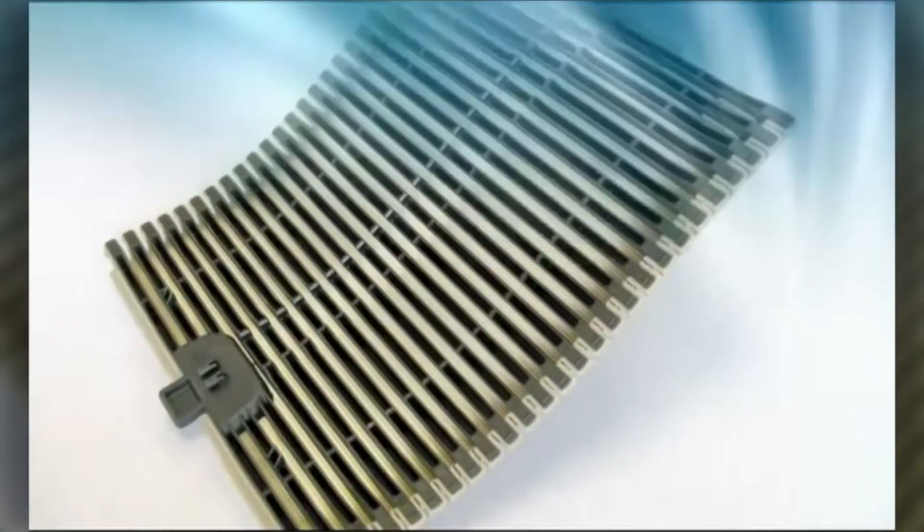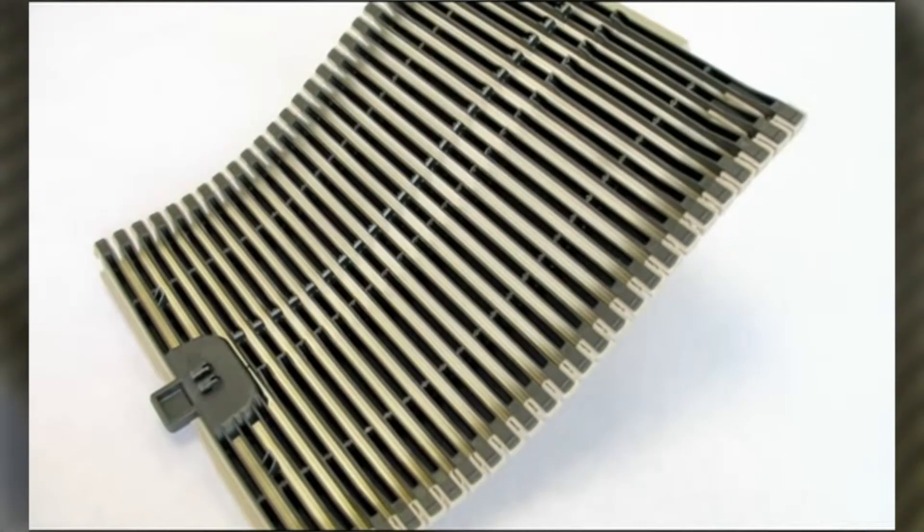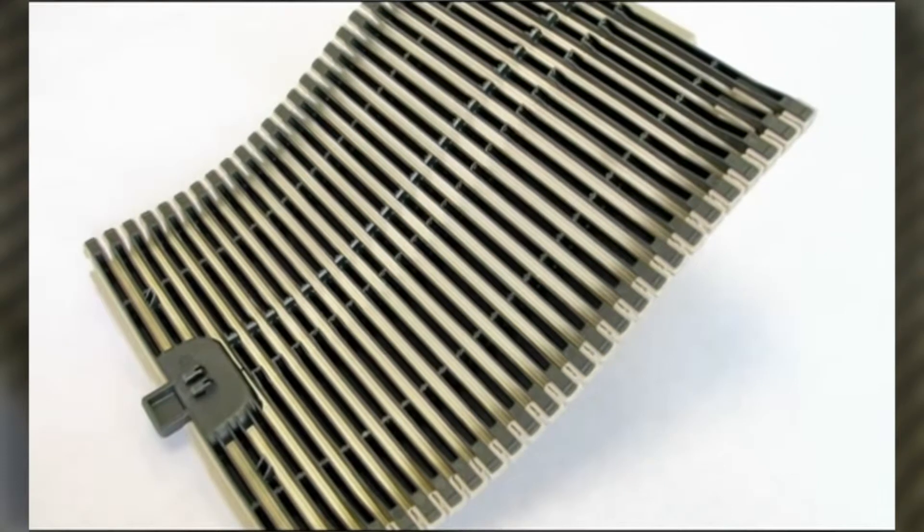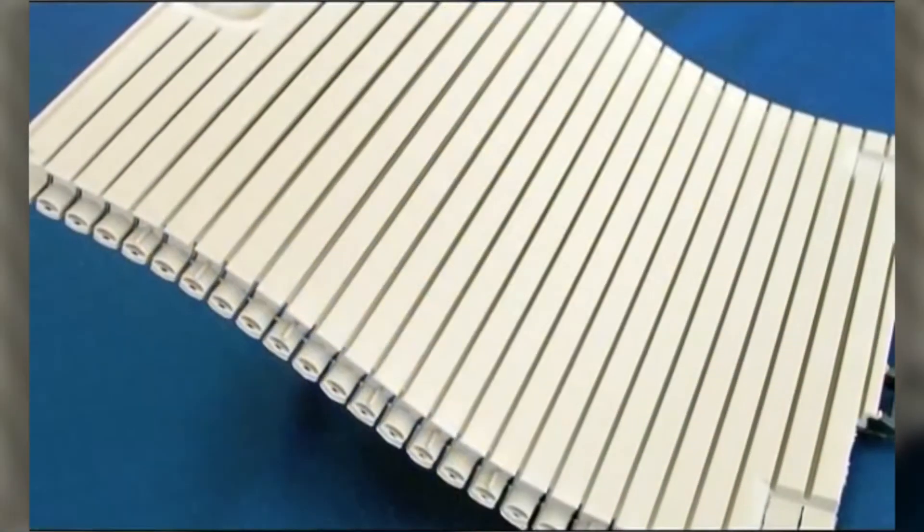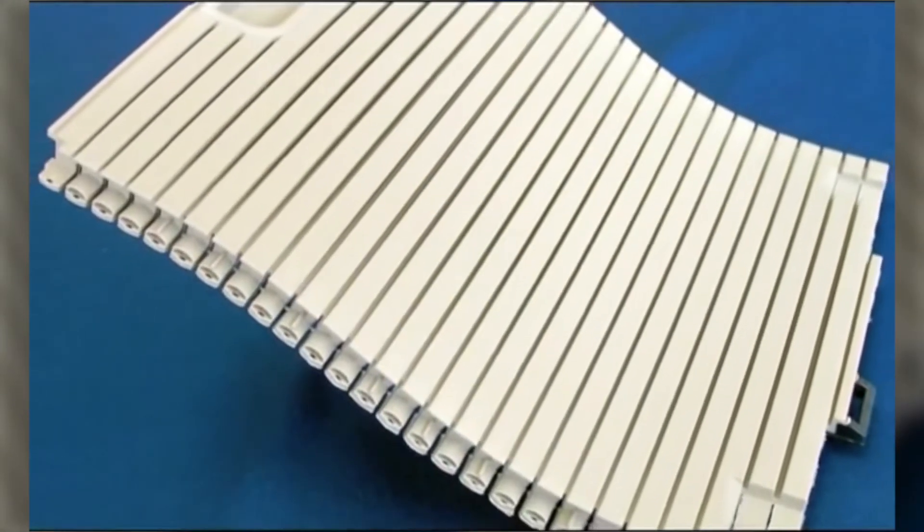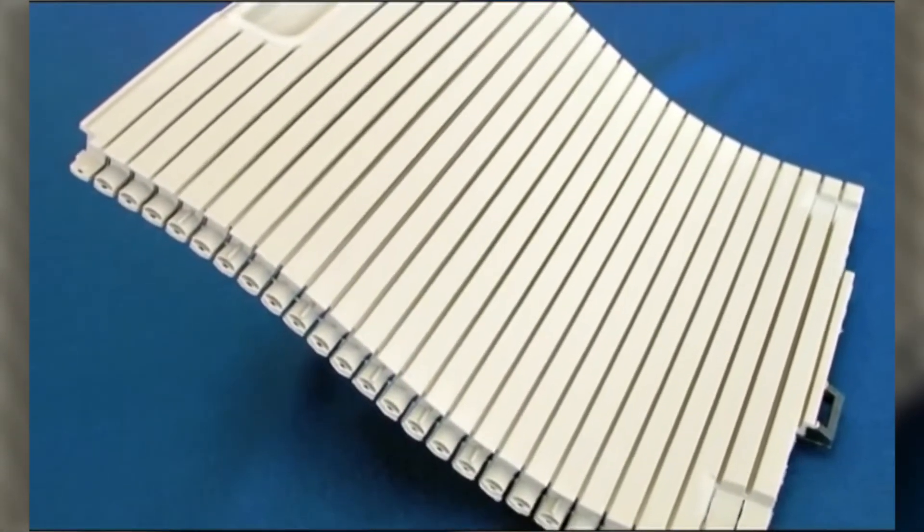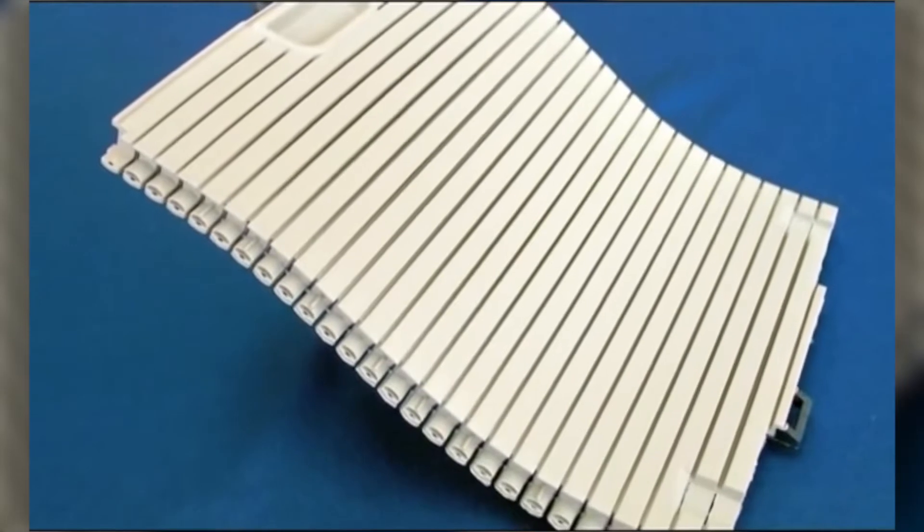The next few slides show an automotive application: a tamboured rolling door covering cup holders. The first shot is a 26-nozzle manifold injecting each of the 26 ribs. The second shot is a hot-cold system injection of TPE.